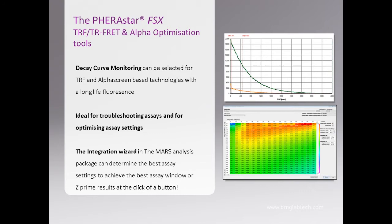When optimizing TR-FRET assays, especially in-house built technology assays, the system can also perform decay code monitoring. This allows us to see the true decay and can be useful for troubleshooting. With time-resolved fluorescence assays, we need to determine the point at which we start collecting the light and how long we collect it for. Using this feature for optimization, we have a built-in integration wizard in our analysis software that, by choosing whether you want to gauge measurements against Z-prime or signal window, can give you an idea of all the permutations and the best settings for your assay configuration — very useful in optimizing signal window and Z-prime for these assays.